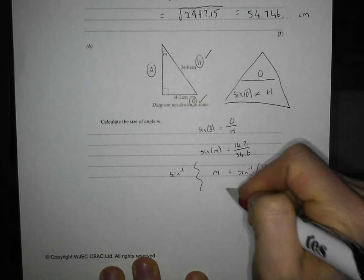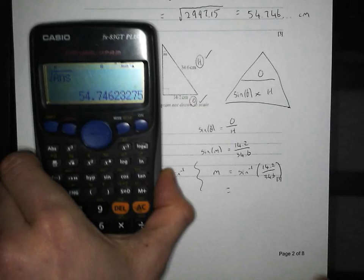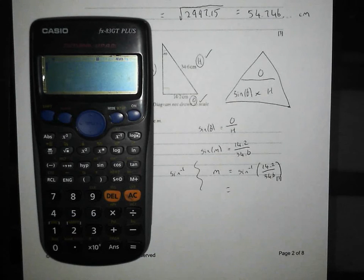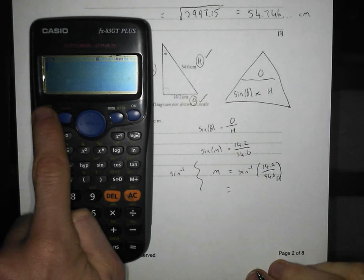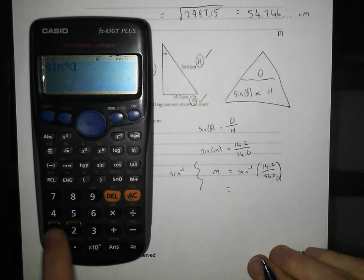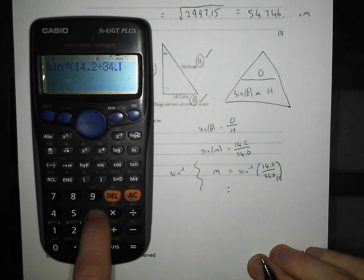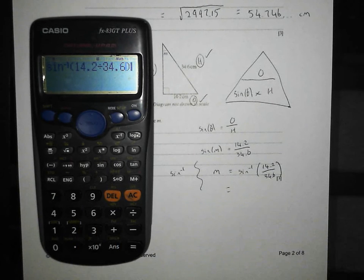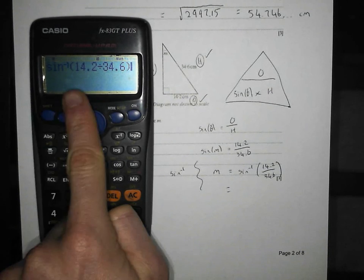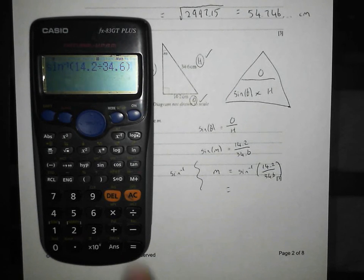And when I've got it like that, it's simply a case of banging it into the calculator properly. So to get my sine to the minus one, shift sine. And I'm going to do 14.2 divided by 34.6. And I'm going to make sure my brackets are closed at the end. Sine to the minus one, 14.2 divided by 34.6. Press equals.